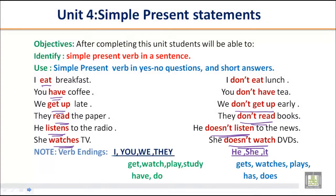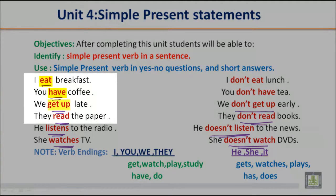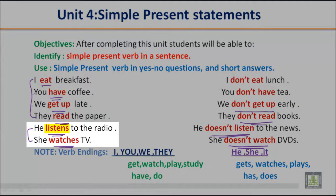If you look at verbs like eat, have, get up, read — these verbs are used with I, you, we, and they. We use the verb in simple present without any change. But if you look at subjects like he and she, and the verbs listens and watches, we add s or es to the verb for he, she, and it.